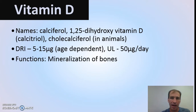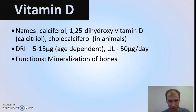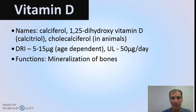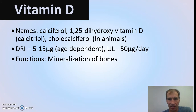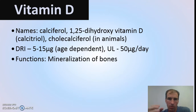Vitamin D actually has a number of precursors, and truth be told, Vitamin D itself doesn't exist in many foods — we'll talk about why in a second. The compound calciferol is ultimately taken in our body and broken down in the liver to calcitrol, and then calcitrol works as a kind of hormone.